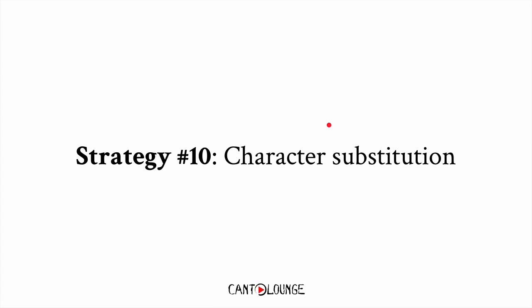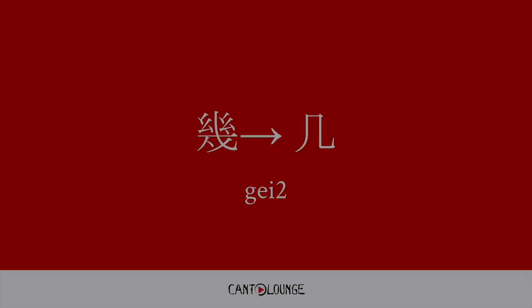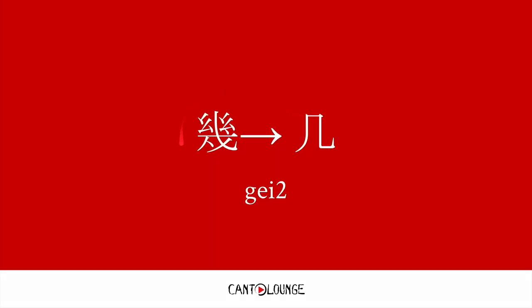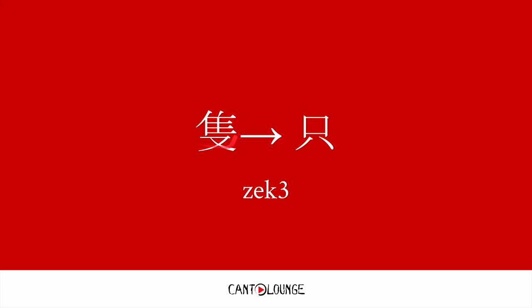And strategy number 10 is character substitution — it's just entirely replaced with a new character. 些 meaning some. 匹 means a classifier for many things — animals and among many things. It's a very versatile classifier.